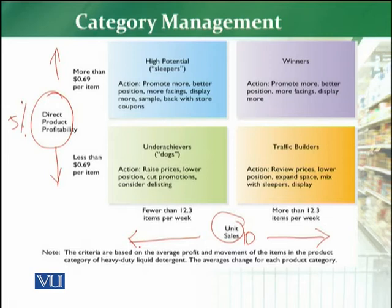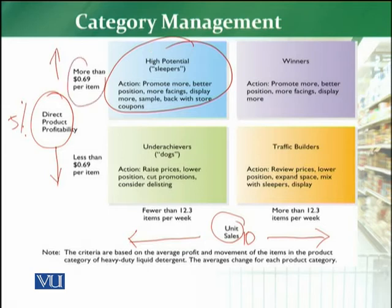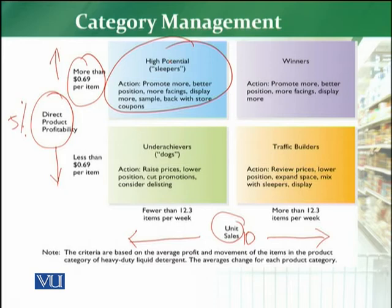First, let's talk about high potential categories. High potential is that product category whose profitability is more than the average. For example, if 5% is defined as the average profit, then it belongs to the more profitable segment. However, its sales volume is less than the average. Such categories are called high potential categories.